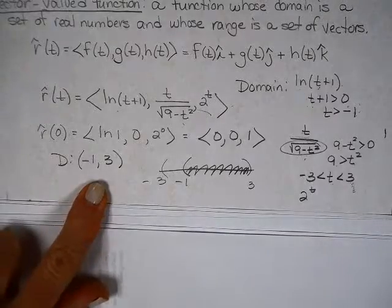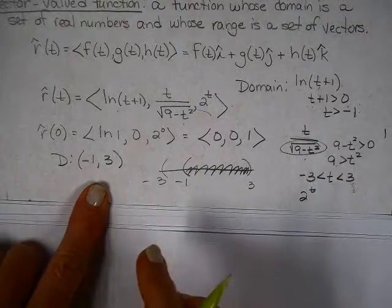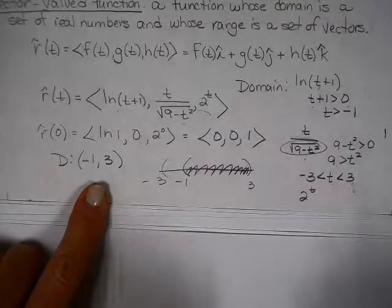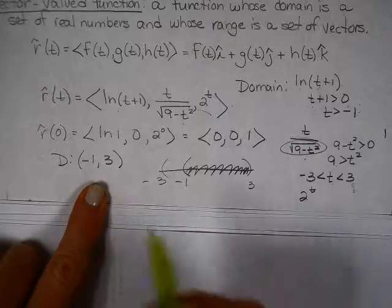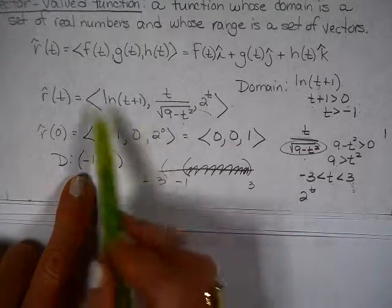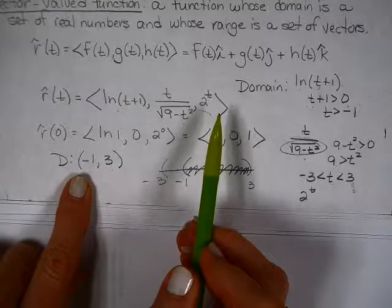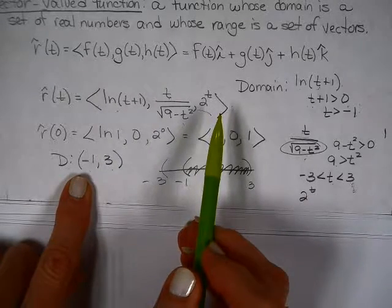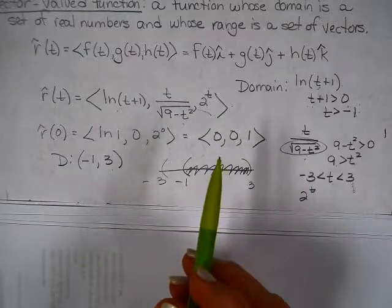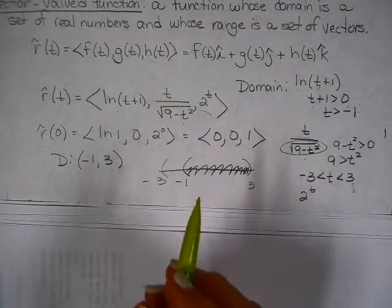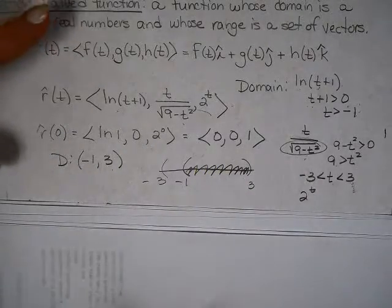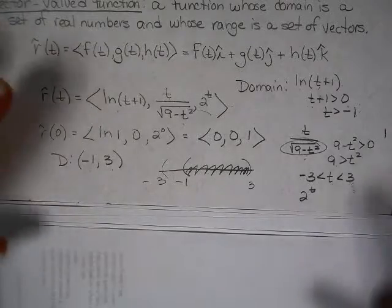You have to put it together and take what works for everything. So the domain of this function is going to be from negative 1 to 3. This is an interval. This is interval notation. This is not an ordered pair. So as long as the numbers you pick are between negative 1 and 3, this function works. Is everybody okay about domain? Just look at each piece just like you would in algebra and pick out what doesn't work.